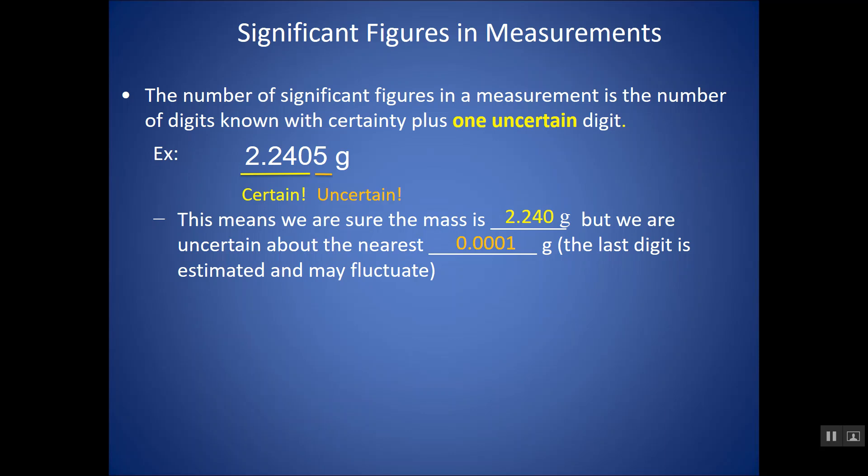However, that last number might fluctuate from time to time each time that I weigh it. Maybe it's 05, maybe sometimes it's 04, given the precision of that piece of equipment. Or from person to person, we might change how we estimate that last number as well, given the piece of equipment.